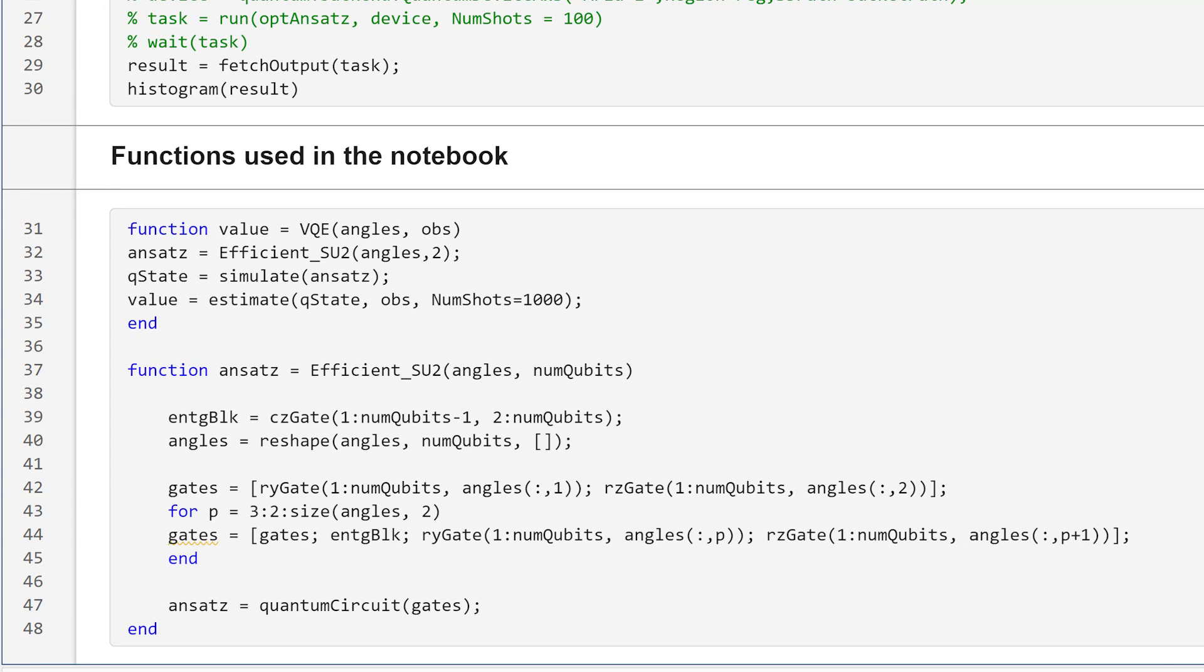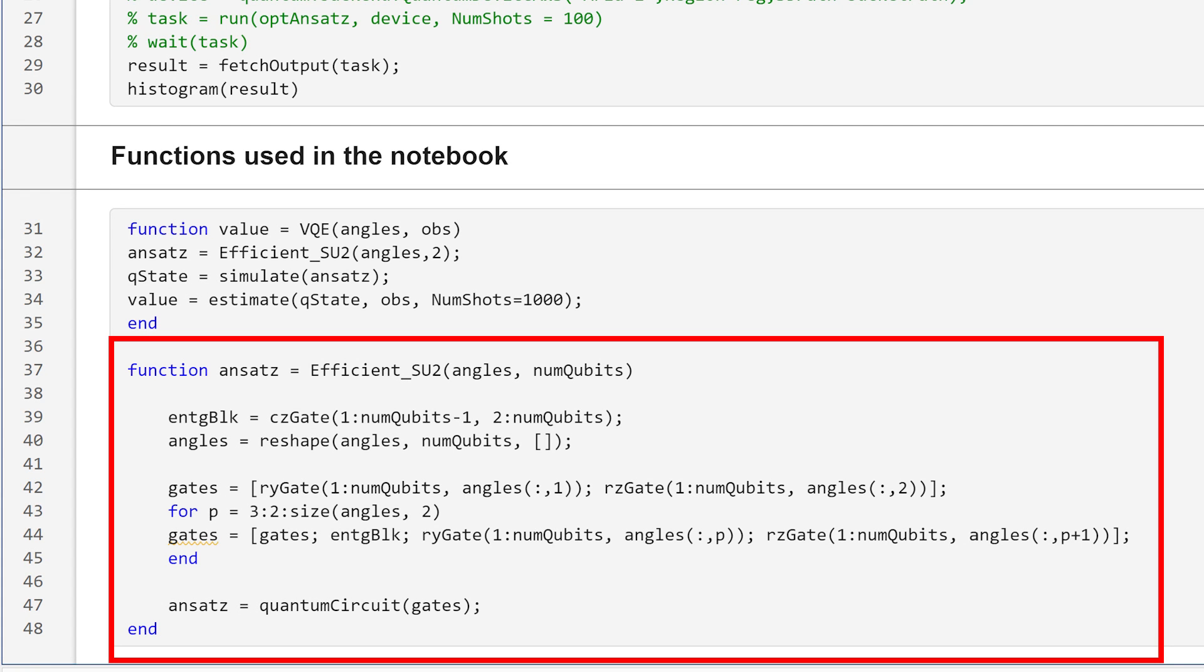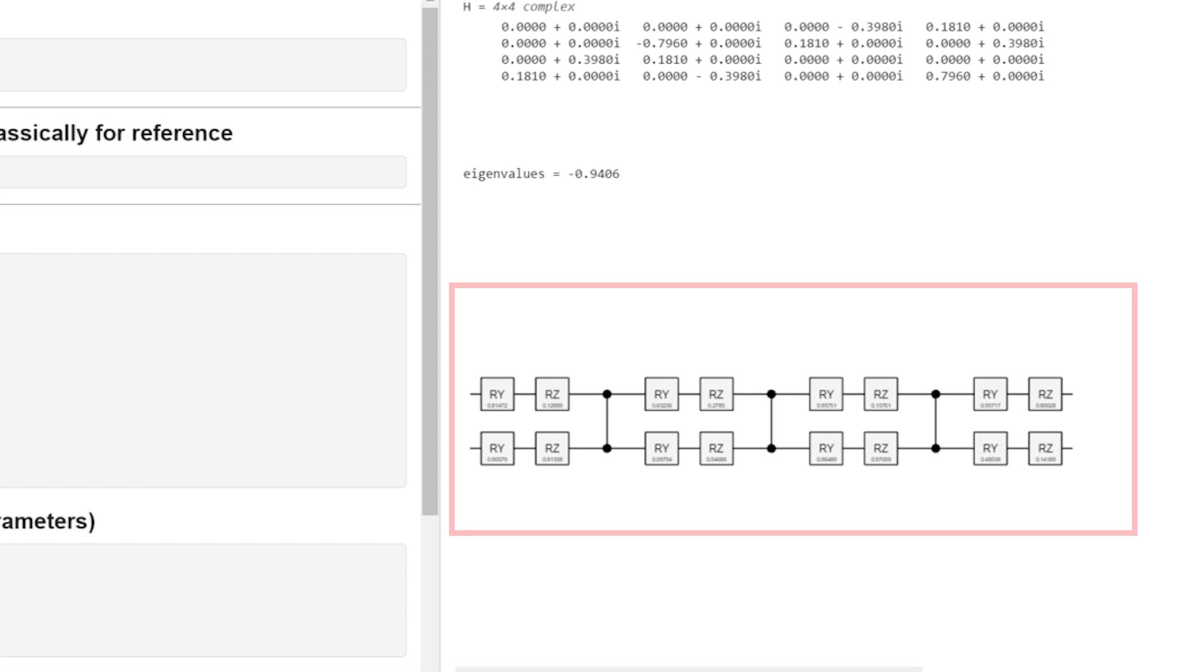Let's build the function to determine the ansatz which will create the trial wave function and plot the circuit. Notice the parameterized rotational gates in the circuit. We want to find the minimum energy and thereby optimize these parameters.